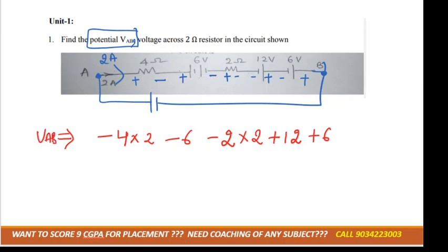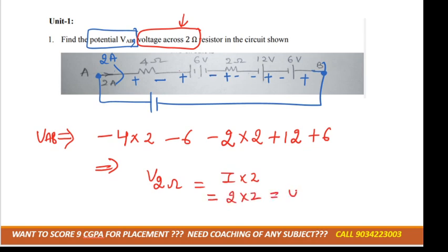the voltage across A and B. Now you can solve it further. Now, across the 2 ohm resistor, V 2Ω, that is I into 2. I flowing through the circuit is 2, so 2 into 2, that is 4 volt. Clear?